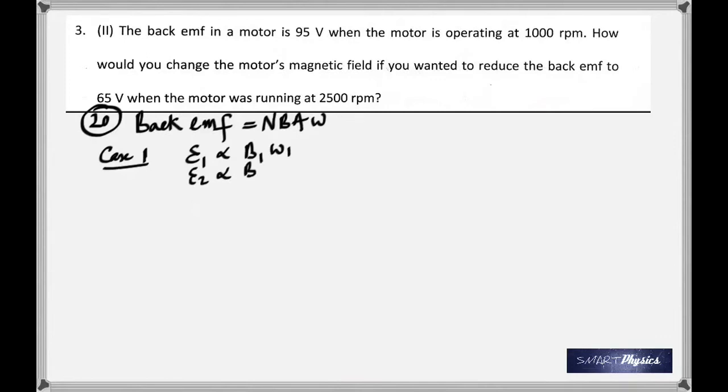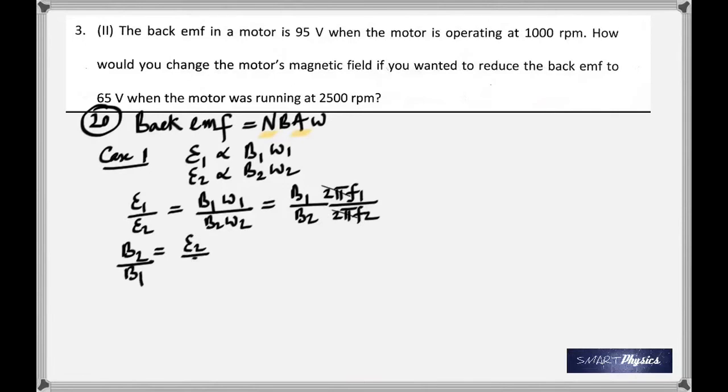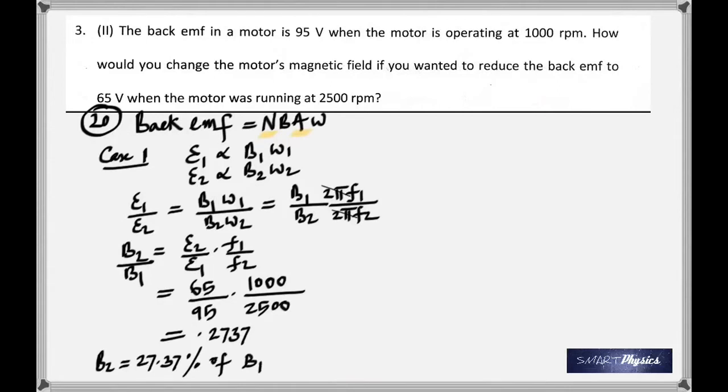Brings us to the third question. The back EMF in a motor is 95 volts when the motor is operating at 1000 rpm. How would you change the motor's magnetic field if you want to reduce the back EMF to 65 volts when the motor was running at 2500 rpm? Back EMF is nothing but the induced EMF, and again the induced EMF peak value is given by NBAω, which means in this case you can see there are two quantities that change: the strength of the magnetic field and the angular speed. So once again taking it as a ratio, because N and A are constants, taking it as a ratio, this is what we get. You are asked to find B2.